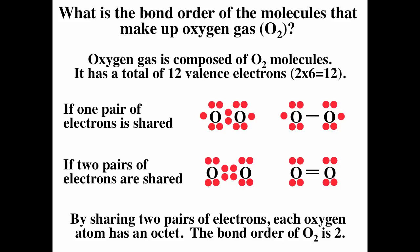Always count the number of valence electrons before and after drawing the Lewis diagram. The bond order for a double bond is always two, so the bond order for the oxygen molecule (O2) is two.